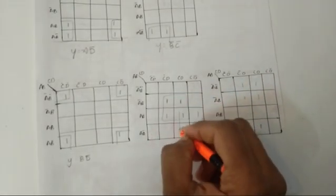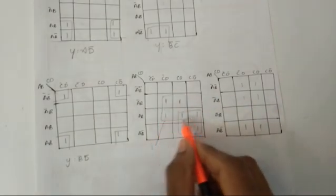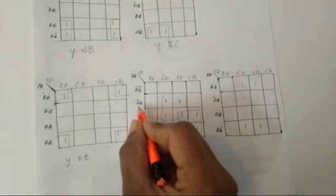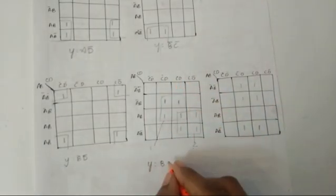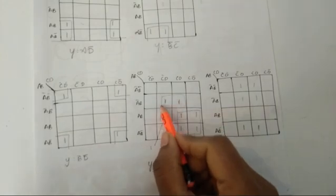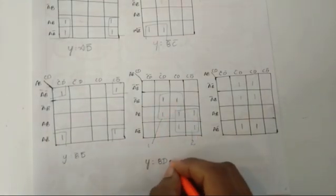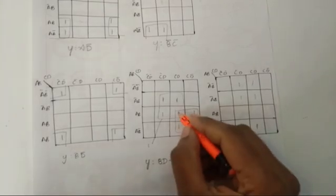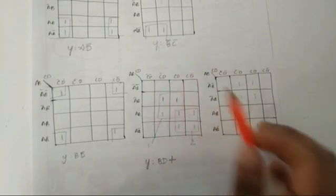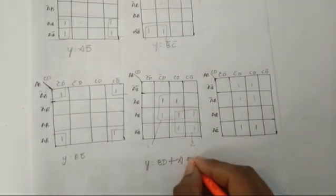This is an overlapping case where I can make two quads. Let me name this as group one and group two. For the first quad, I consider these two terms and these two. Output y: Ā changes to A, B is there, C̄ changes to C, so write D. That completes the expression for the first quad. For the next group I write plus, then consider the second quad.